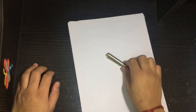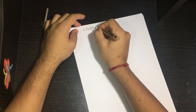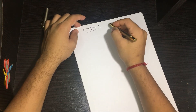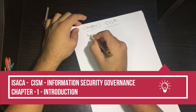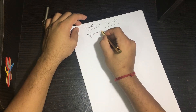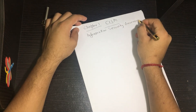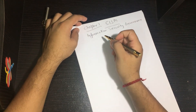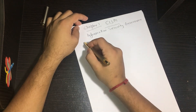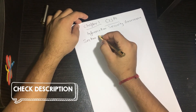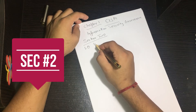Let's get started. Let me write the chapter name first. This is Chapter 1 from the CISM book, and the chapter name is Information Security Governance. We have already seen Section 1 in our earlier videos. Today we are going to cover Section 2, and we'll start with the 1.0 heading, which is Introduction.